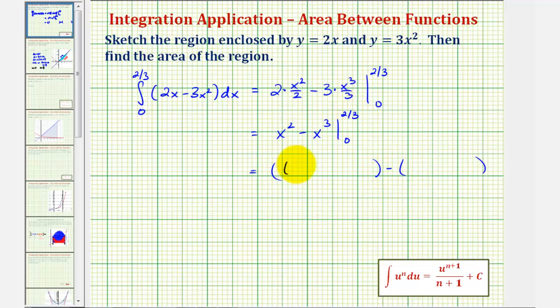So when x is 2 thirds, we'd have 2 thirds squared minus 2 thirds cubed, minus when x is zero, we just have zero squared minus zero cubed.